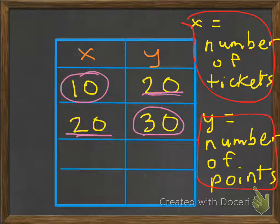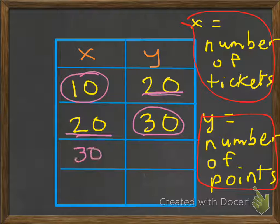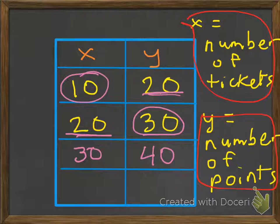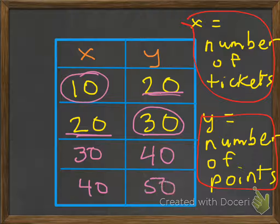Now what would be the rest of it? How would we fill in the rest of this chart? Well, the next one would be, let's say, we need 30. And that would give us 40 points. And then for our x, 40, this will give us 50.